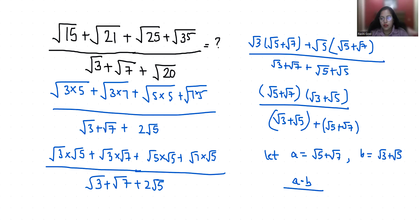So it becomes A·B / (A + B), which I can write as X. So 1/X equals (A + B) / (A·B), which is 1/B + 1/A.